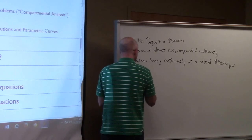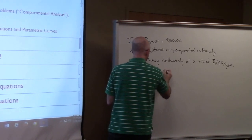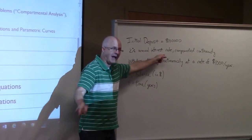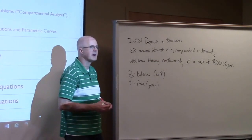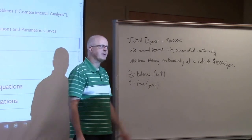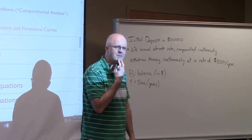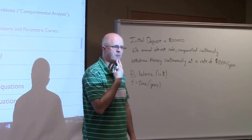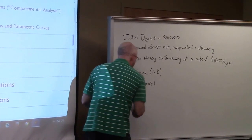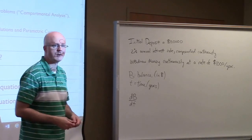The interest rate is compounded continuously but it's an annual rate, so your money grows by approximately 2% per year if you don't withdraw. But we are withdrawing. Can we find a formula for the balance as a function of time and answer questions like: will you ever run out of money?